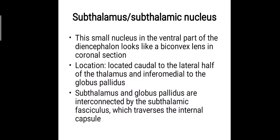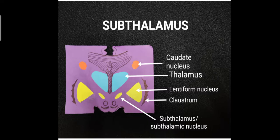The subthalamus is a small nucleus in the ventral part of the diencephalon and it looks like a biconvex lens in the coronal section. It is located caudal to the lateral half of the thalamus and inferomedial to the globus pallidus, while the subthalamus and the globus pallidus are interconnected by the subthalamic fasciculus, which traverses the internal capsule.